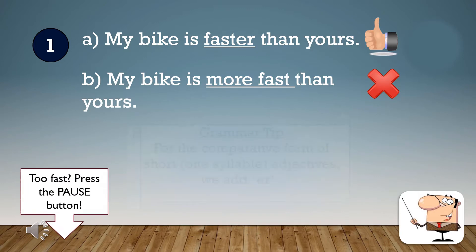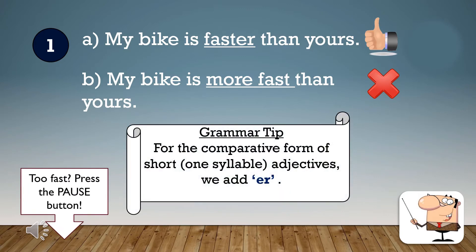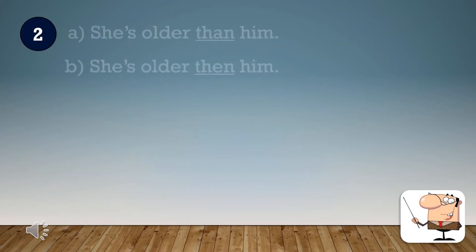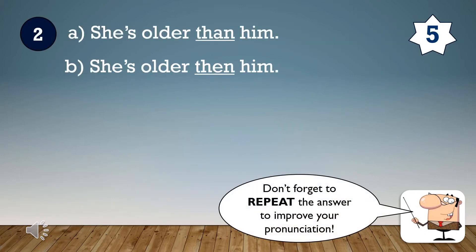My bike is faster than yours. Number two. She's older than him.